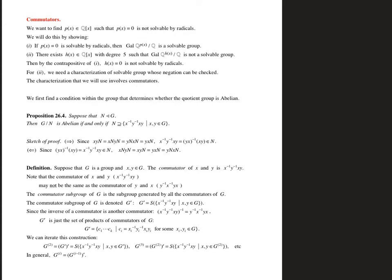The idea of a commutator is down here in the middle of the page. The commutator of x and y is an element that we make by multiplying x, y, and their inverses together.